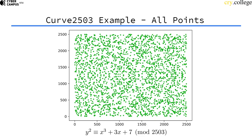And this is how the curve looks. Maybe it's not as pretty anymore. But those are all the points that fulfill the curve equation modulo 2503. And they form a group under point addition.